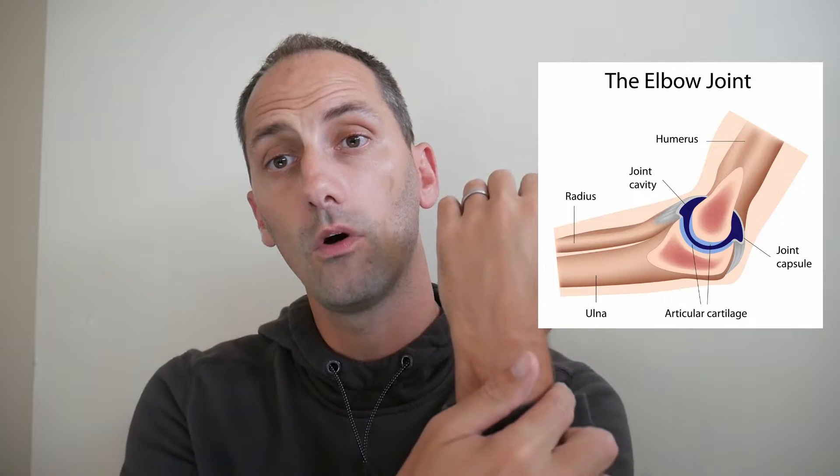We've then got the elbow joint. The humerus carries on going all the way down to meet what we call the elbow joint. In that joint we've got the radius and the ulna — the radius is on top, the ulna is underneath — and they meet the humerus. At that joint, which is what we call a hinge joint, we can create movements like flexion and extension.